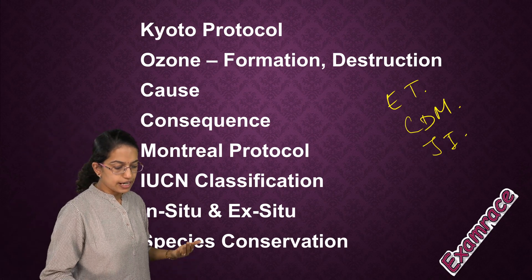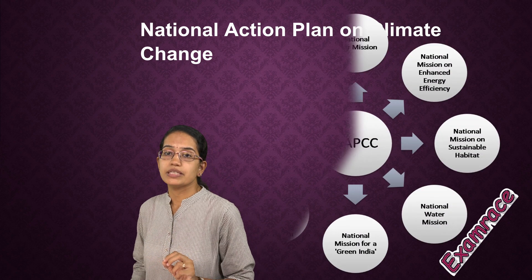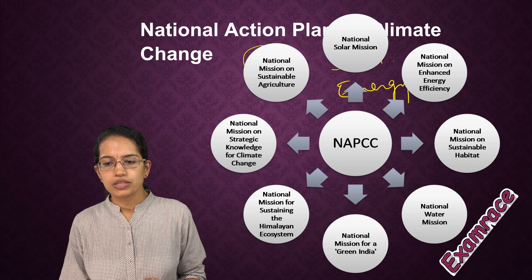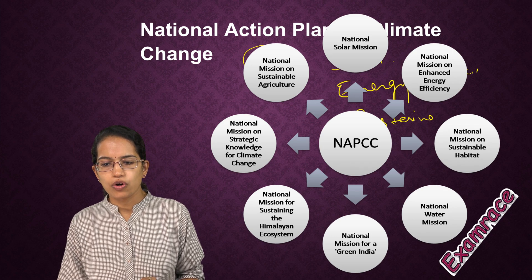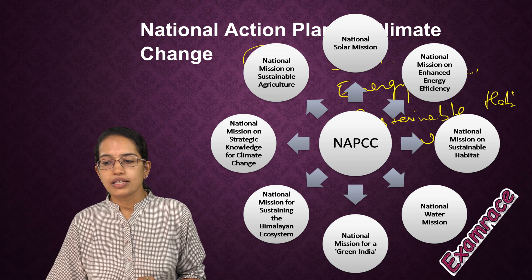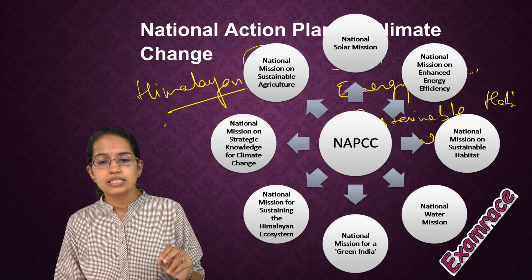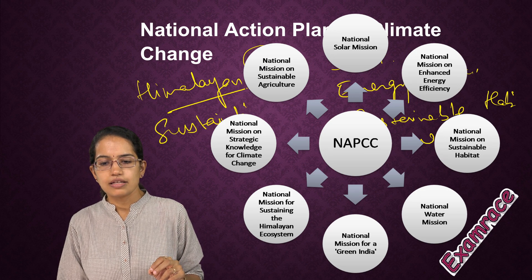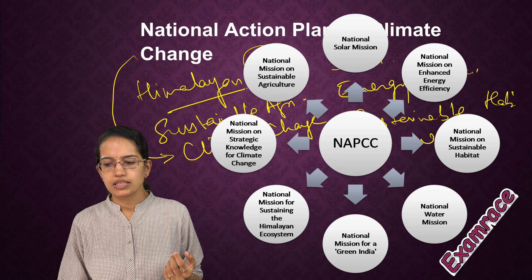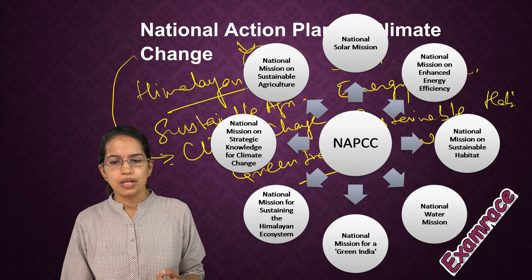The phasing out of the pesticide methyl bromide took place in 1995, which had led to severe depletion of the ozone layer. The National Action Plan on Climate Change is very important — it has eight missions: the Solar Mission, the Energy Efficiency Mission, Sustainable Habitat, the Water Mission focusing on integrated water resources, a special focus on the Himalayan region, Sustainable Agriculture, Mission on Climate Change with strategic knowledge for climate change, and Green India Mission.